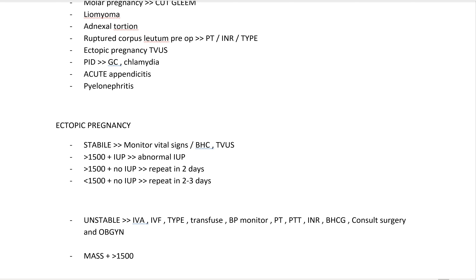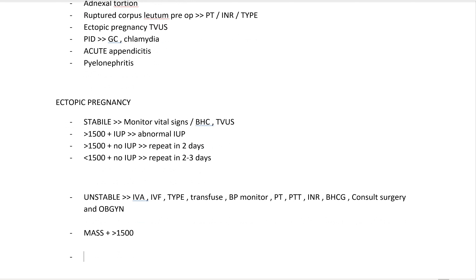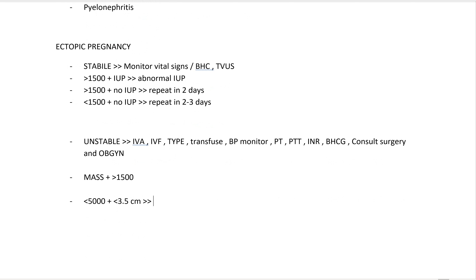This is very high yield for the exam. If there is an adnexal mass plus beta HCG more than 1500, differentiate into two categories: beta HCG more than 5000, or adnexal mass more than 3.5 cm, or fetal heart rate present — versus beta HCG less than 5000 and mass less than 3.5 cm. Management will differ based on these criteria.